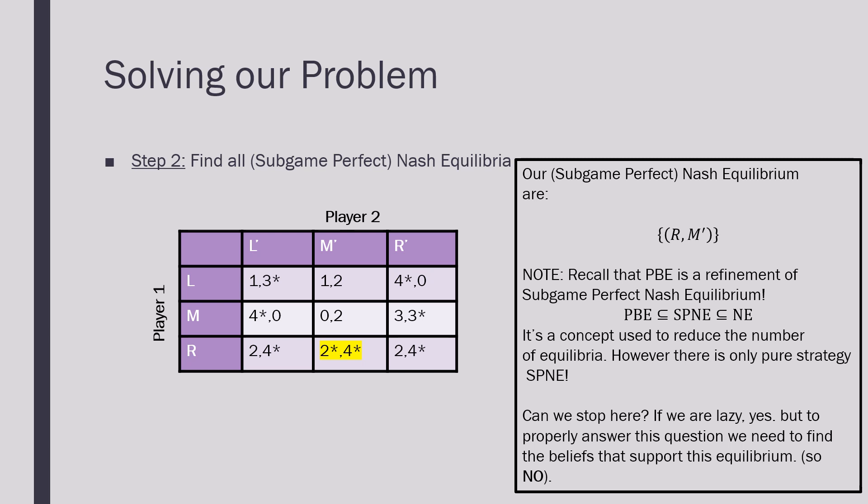And the reason why we use Perfect Bayesian Equilibria and why we're so interested in it is because we want to reduce the number of equilibria. However, in this context there's only one Pure Strategy Nash Equilibrium.